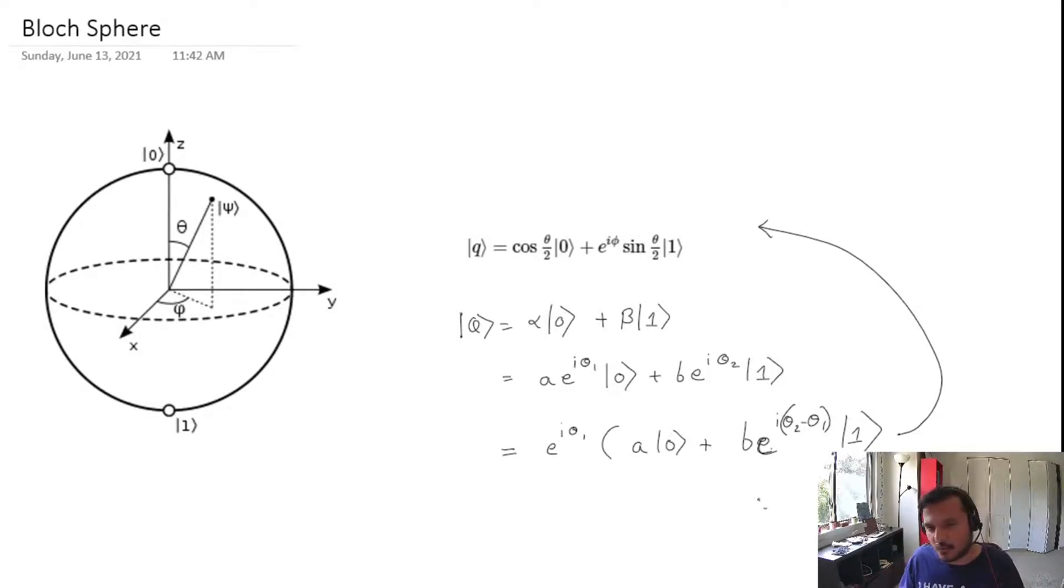A good way to think about qubits is this Bloch sphere representation. The idea behind that is to consider a sphere, like a ball, and each qubit state is represented by a point on the surface of the ball. For example, this is the sphere, a three-dimensional sphere. Zero, the state zero, is the north pole, and the state one is the south pole.